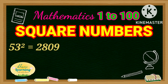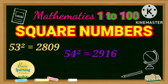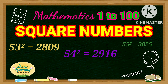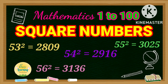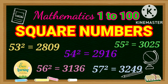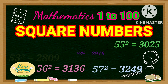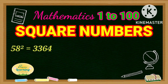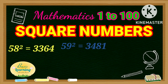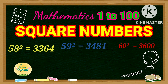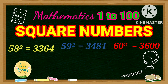Square of 53 is 2,809. Square of 54 is 2,916. Square of 55 is 3,025. Square of 56 is 3,136. Square of 57 is 3,249. Square of 58 is 3,364. Square of 59 is 3,481. Square of 60 is 3,600.